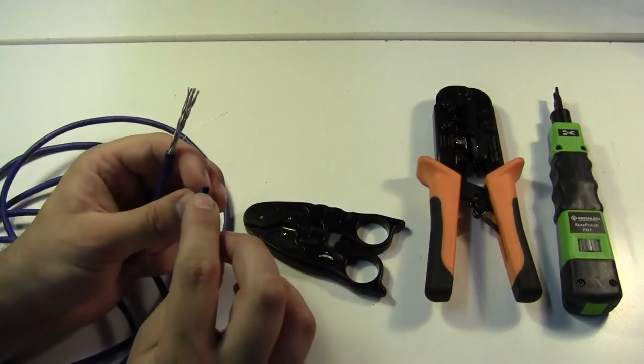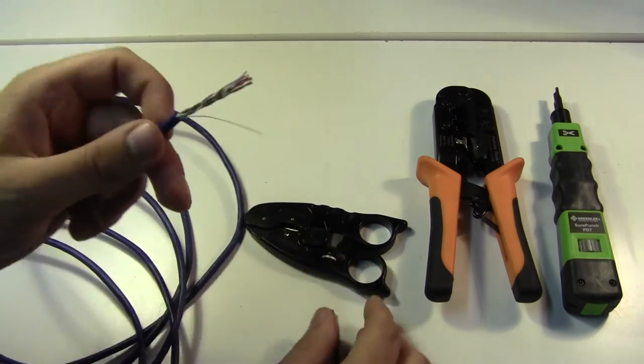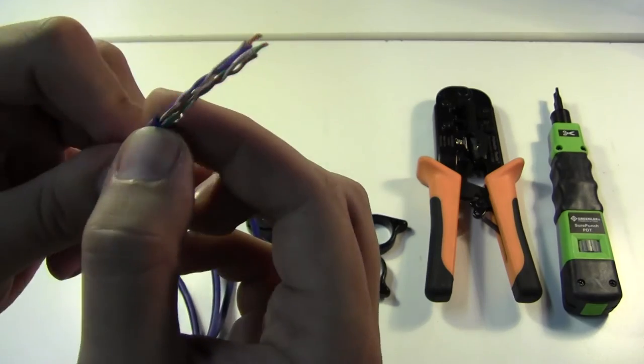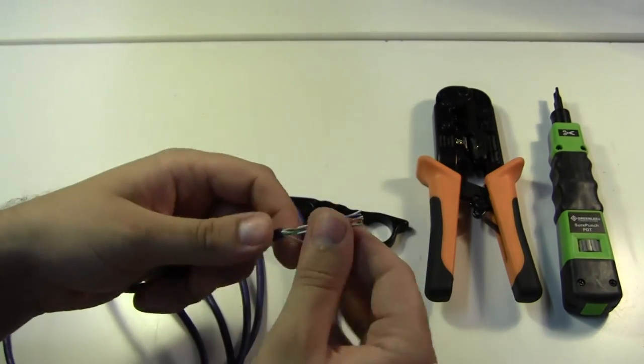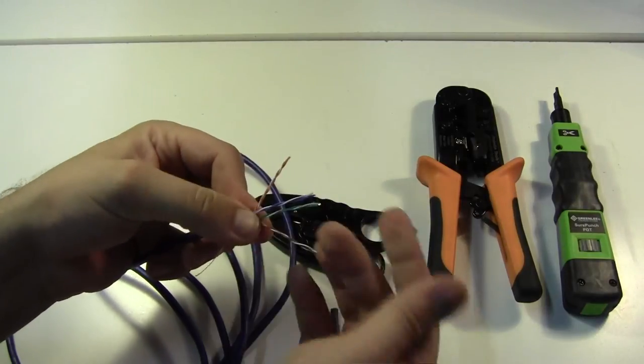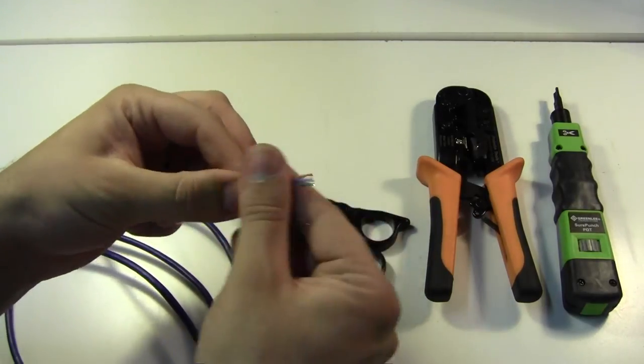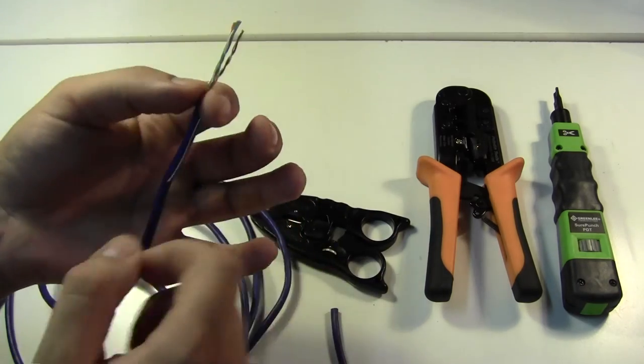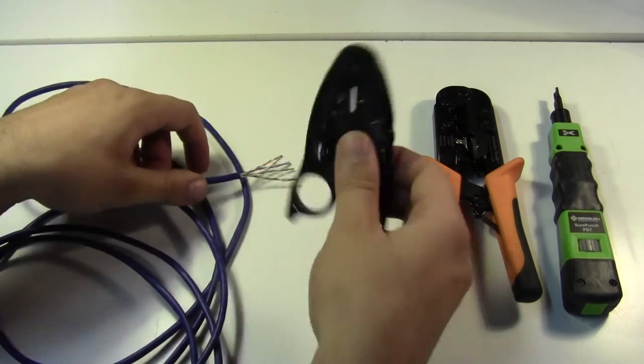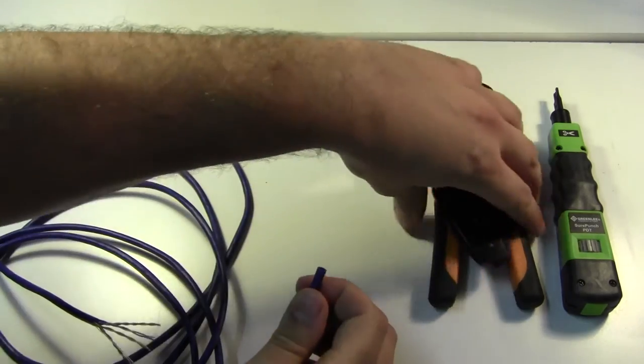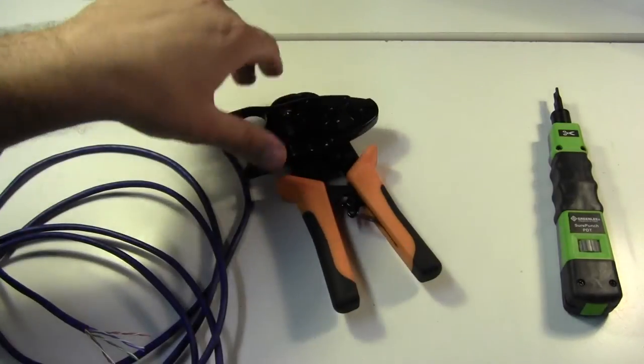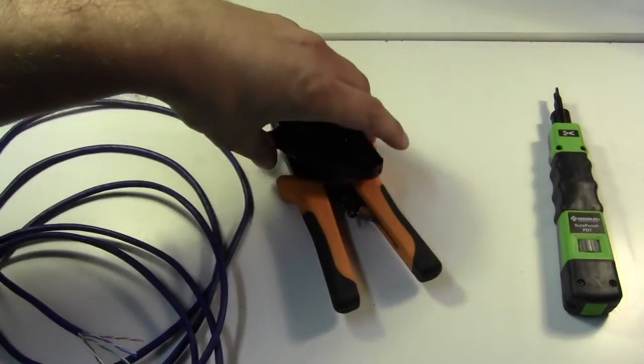It does a really good job of only cutting through the outer coat, so on the actual pairs right here, I haven't nicked any of the four pairs. So I can sit here, comb out the four pairs of cable, put it in the connector, and terminate it without having to use the ripcord to pull back more vinyl. So that's the stripper. I kind of like it. These two by themselves is what I use when I'm just going out. I've used those for years now, and I really like them.